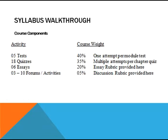Here are the course components. There are going to be five tests for this course — the weights for these tests will equal 40% of the final grade. You'll get one attempt per module test. There are 18 chapters and therefore 18 chapter homework quizzes; you'll get multiple attempts per chapter quiz, and they will be weighted 35% of the course. Then we have six essays, which will count for 20% of the final course grade, and an essay rubric is provided. There will also be anywhere from 3 to 10 discussion forums and/or activities, and they will be 5% of the course's final grade, with a discussion rubric provided as well.